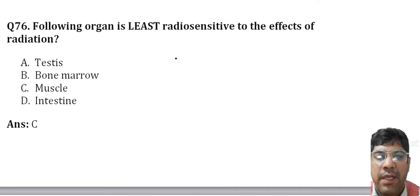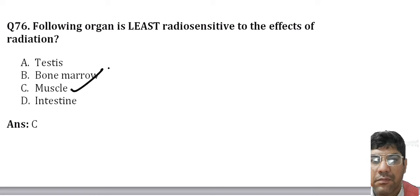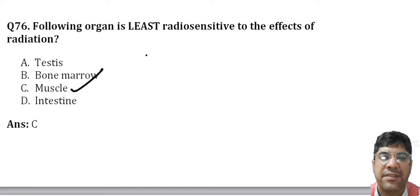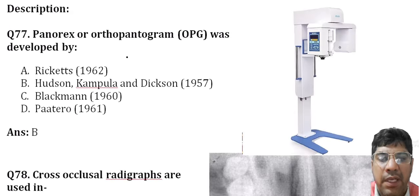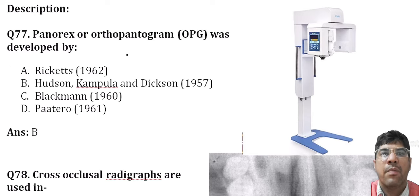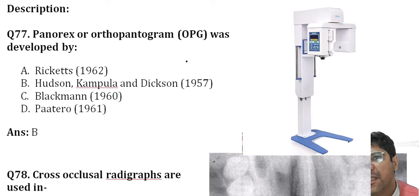The organ least radio-sensitive to the effects of radiation is muscle. The panoramic radiograph (OPG) was developed by Hudson, Campula, and Dixon.